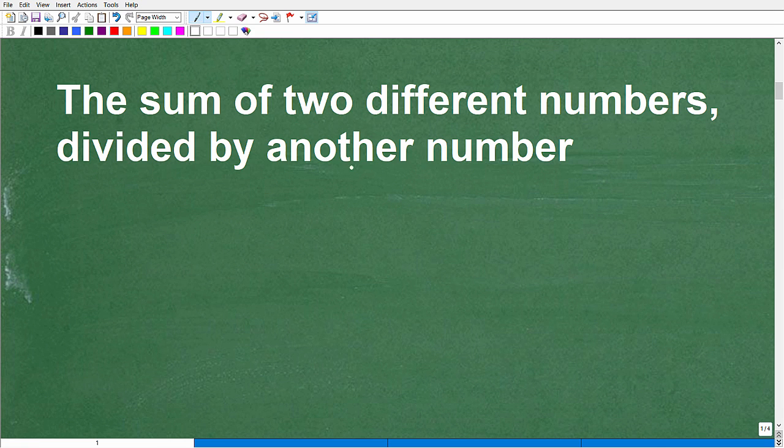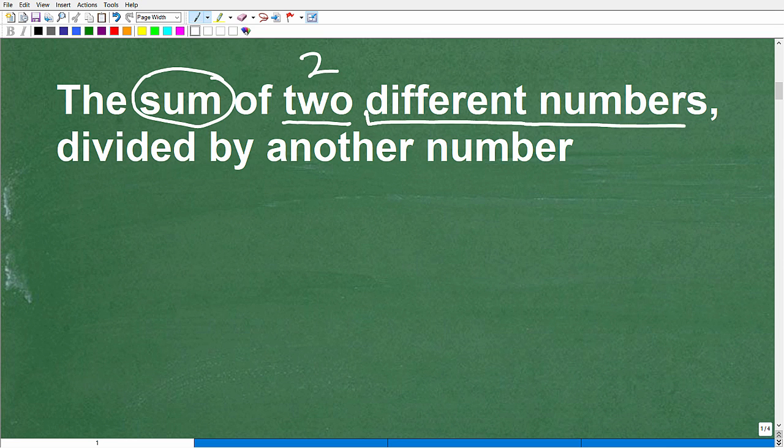We've got the sum of two different numbers. What are some keywords here? We have the sum. The sum, that means something. And we have two. And then this word here, different. We have two different numbers, not the same numbers. And then obviously, we have divided by, by another number. So we have the sum of two different numbers divided by another number.